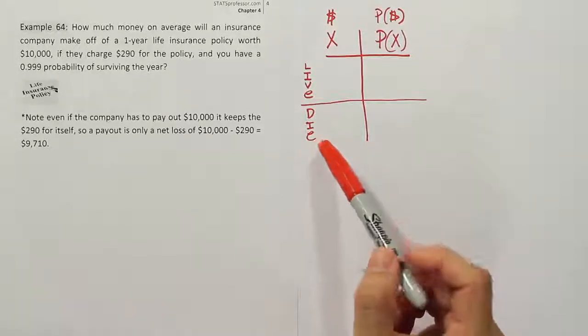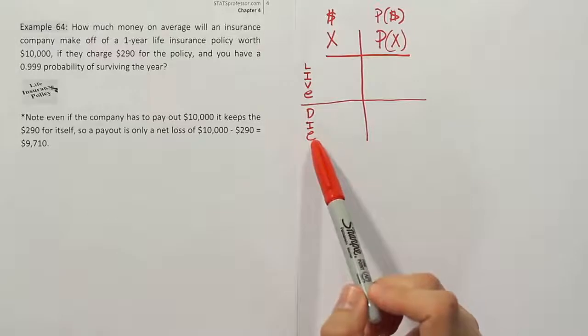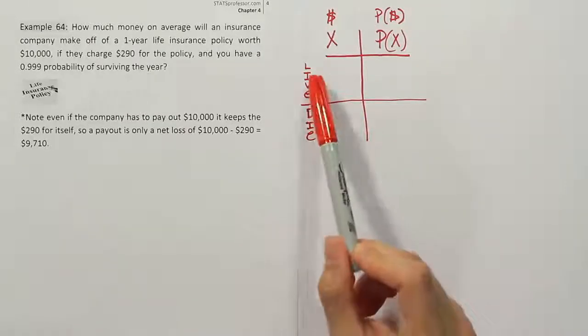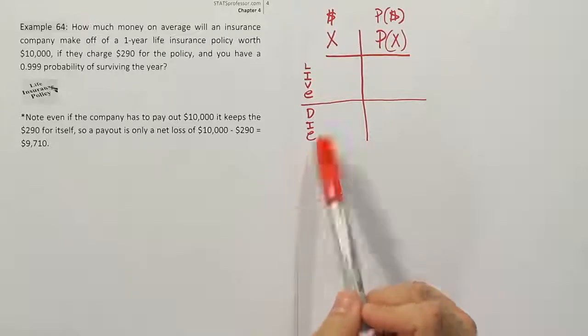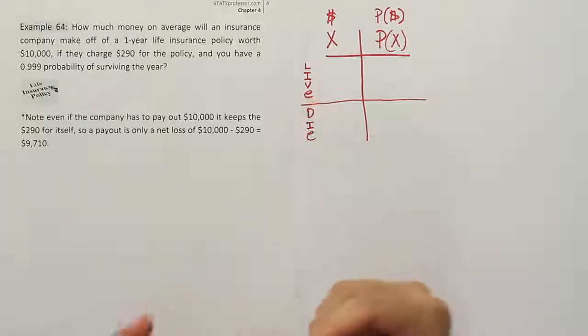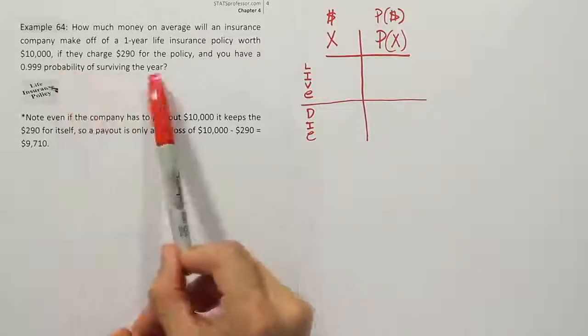They don't go directly in the table because they're not dollar amounts, they're not numbers, and we need to put only numbers in these positions. But I do want to have them here because I want to know why this dollar amount is in this location. It's linked to the scenario where the person lives all the way through the year.